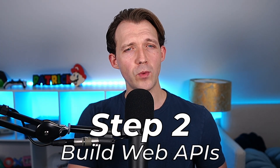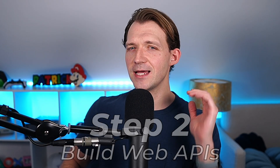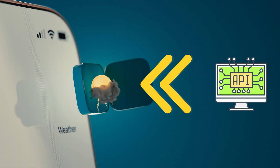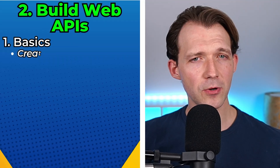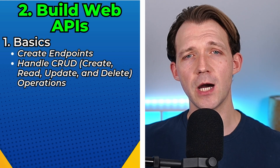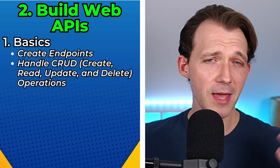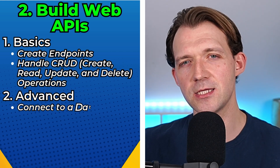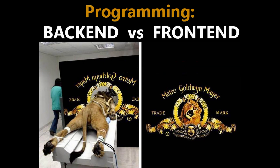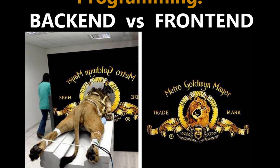Step number two is build a web API. APIs let your app talk to other systems. For instance, imagine a weather app pulling data from a weather service API. Start with the basics: create endpoints and handle CRUD — meaning create, read, update and delete operations. You may also explore connecting to a database and have a glance at authentication. This is a great way to build the backend of your web applications.